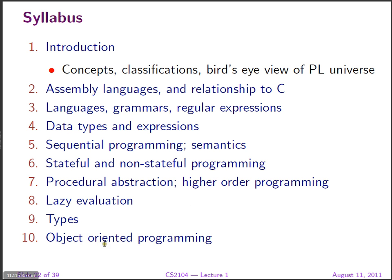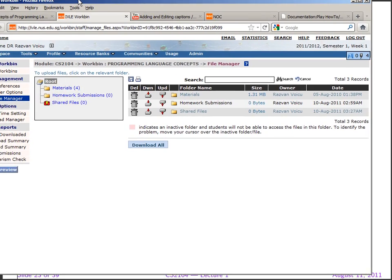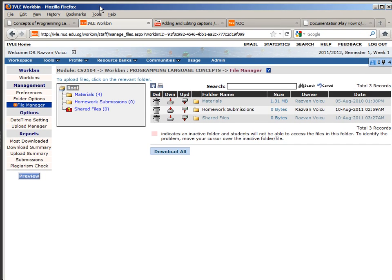Also a very important topic: object-oriented programming — we'll try to understand why it helps with large software development and why it has been so successful. Then more standard programming language topics: exception handling, event handling, modules, components, usability, robustness, and embedded languages. For instance, JavaScript is an embedded language implemented inside a browser, allowing programmatic tweaking of the application.